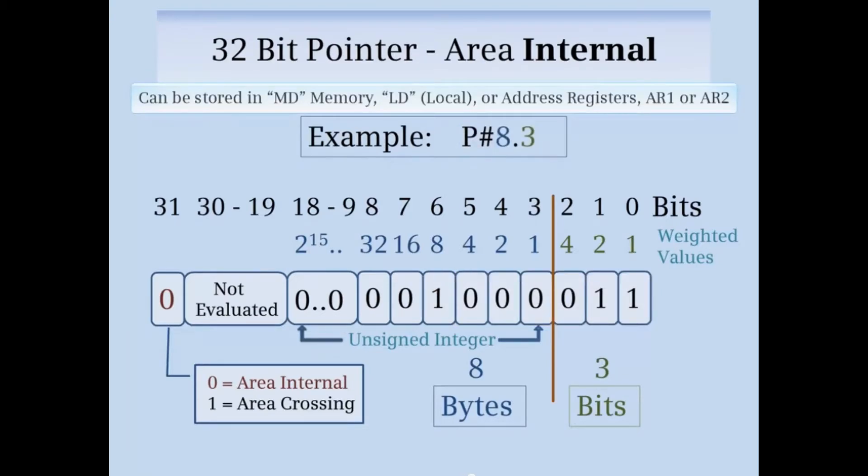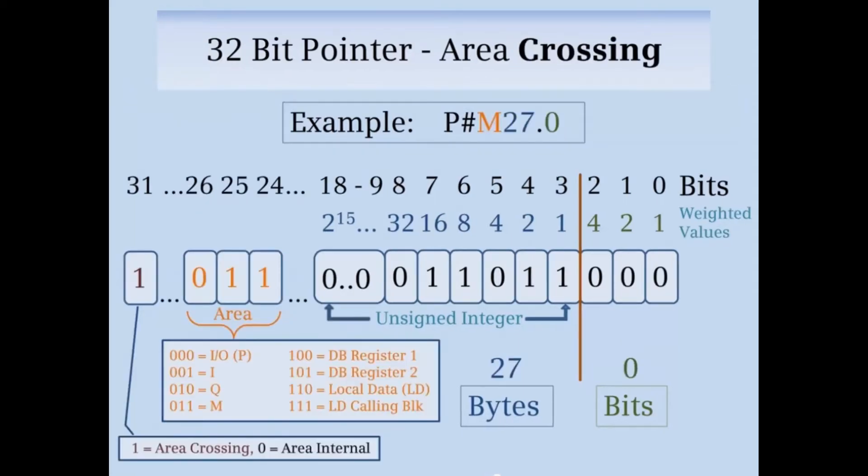This address could be stored in a memory double word, local variable double word, or in address registers 1 or 2. The 32-bit area crossing pointer is similar to the area internal except the area is stored as part of the address.